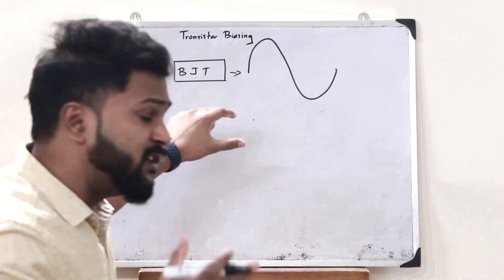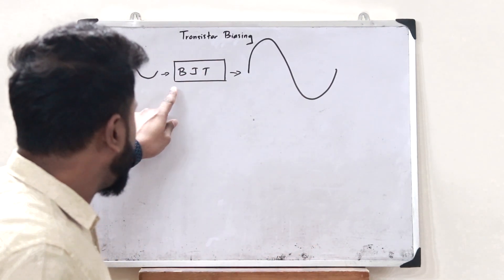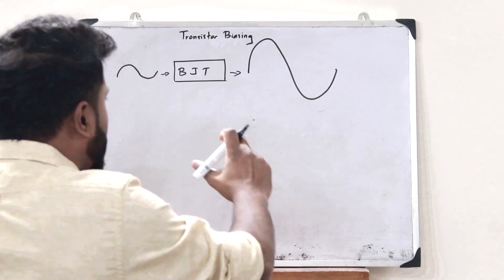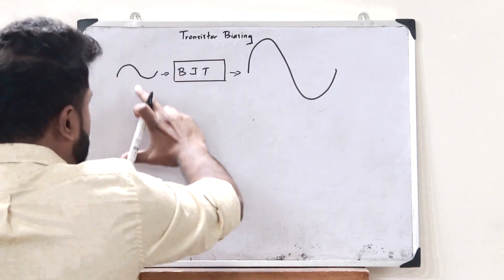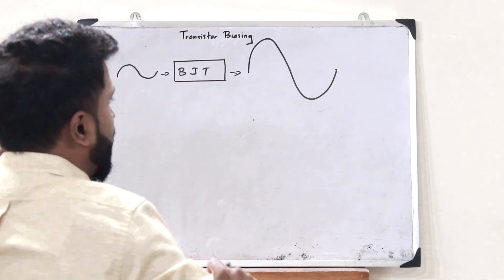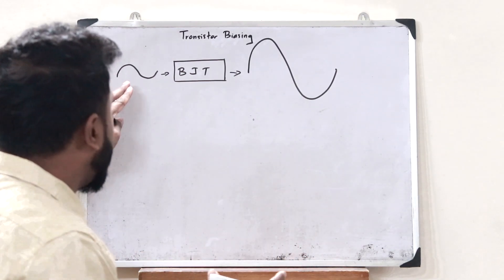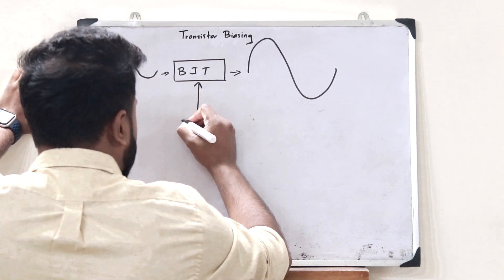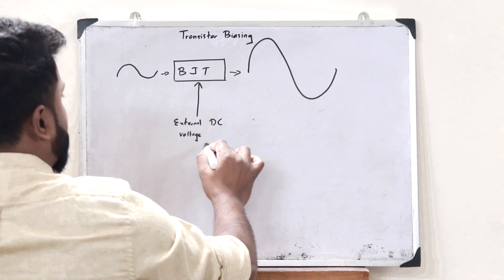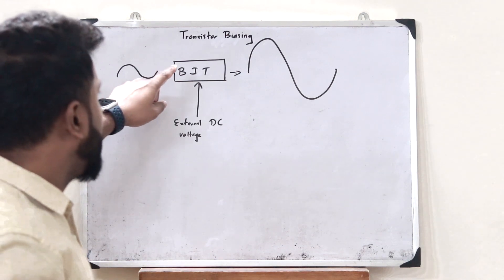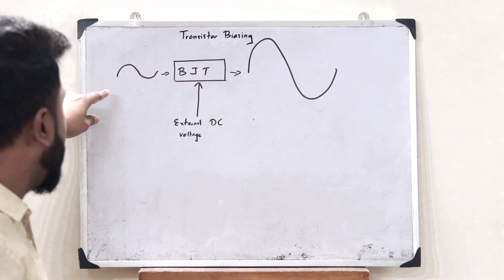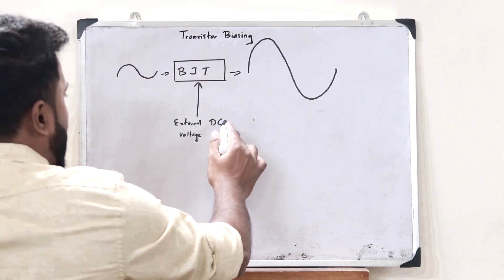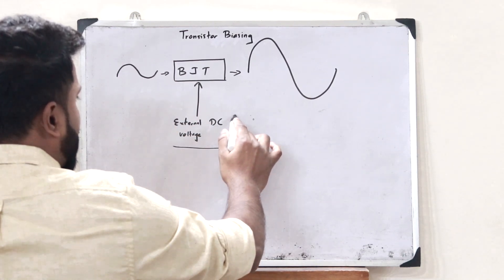But this doesn't seem logical, because just by using this BJT alone, it cannot simply amplify the signal. Rather, we observe that something has to be provided to this particular BJT so that it can boost or amplify this particular input signal. Therefore, for the purpose of amplifying this input signal, we give an external DC voltage. This simple external DC voltage that we provide to a bipolar junction transistor so that we can amplify a particular time-varying signal is simply what you refer to as a biasing voltage.